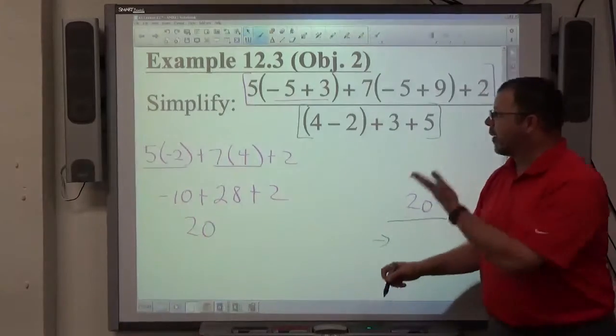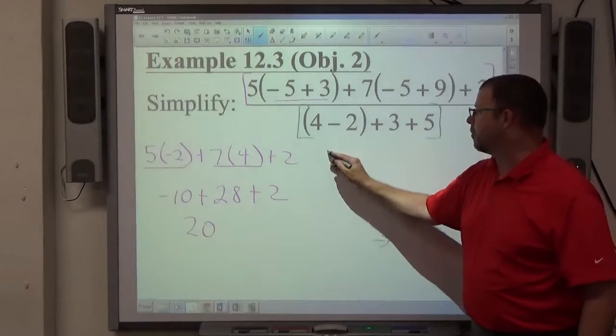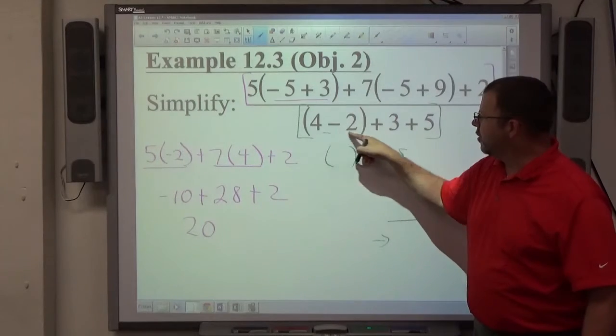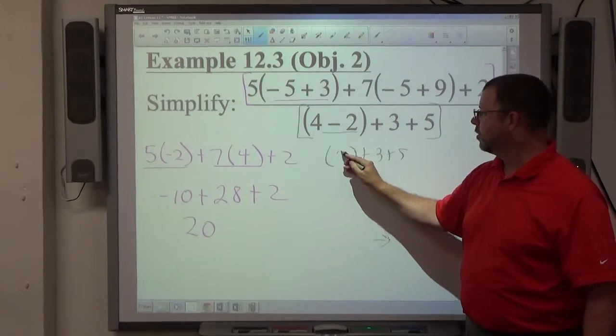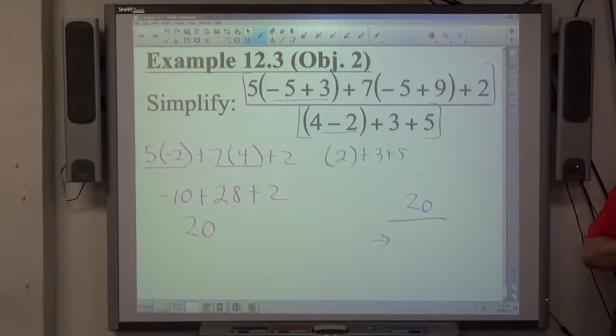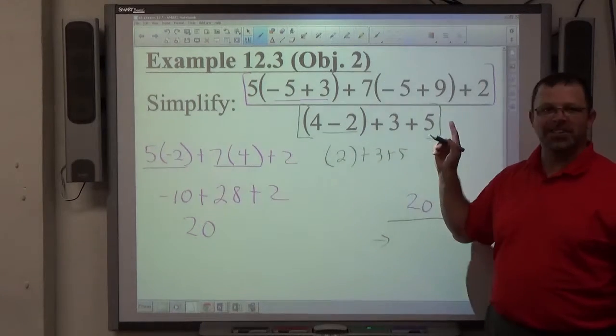The next thing I would do is evaluate the bottom. So I've got a parentheses plus 3 plus 5. In the parentheses, 4 minus 2 is equal to 2. The reason that equals 2 is because back in second grade, when you learned how to subtract, 4 minus 2 equals 2, it still does. Sometimes they're just that easy.